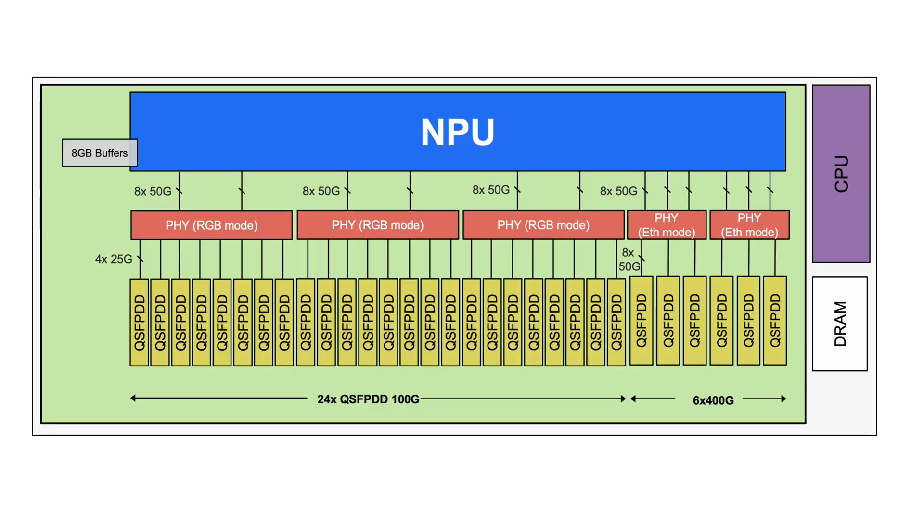When a BFD packet is received on the router or generated, where does it happen exactly — in the route processor, in the line card CPU, or some specific element inside the forwarding ASIC itself? BFD implementation varies platform to platform. On NCS 5500 and 500 series platforms, BFD is offloaded to the network processing unit. The BFD hardware offload improves scale and also reduces the network convergence time by sending rapid BFD control packets for faster network convergence.